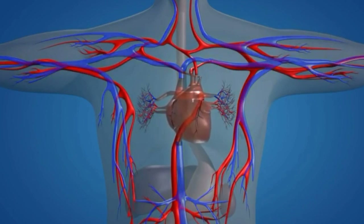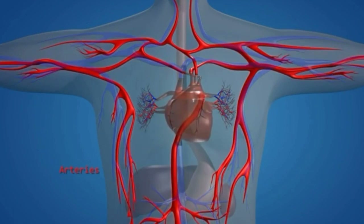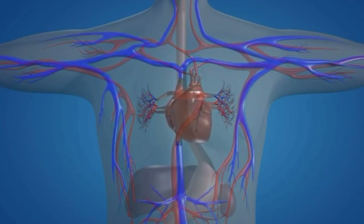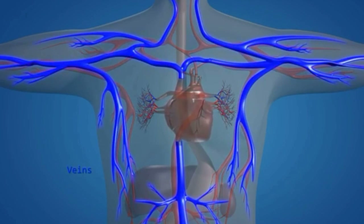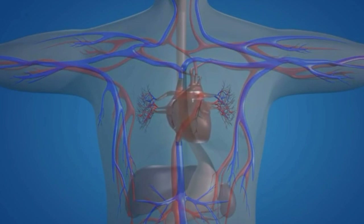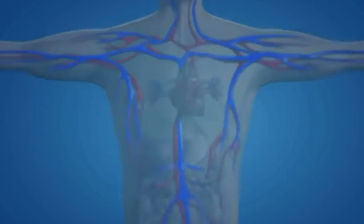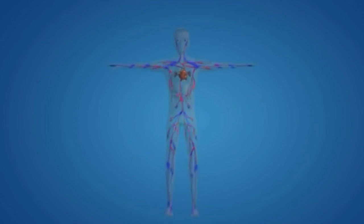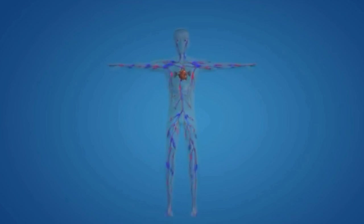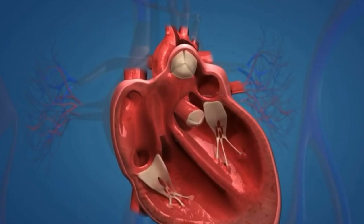The function of arteries is to carry oxygen-rich blood from the heart to the entire body, which is why they are represented in red. The function of veins is to carry deoxygenated blood from all body parts back to the heart. Capillaries help in the diffusion of gases. Oxygenated blood is always directed away from the heart, and deoxygenated blood is directed toward the heart.